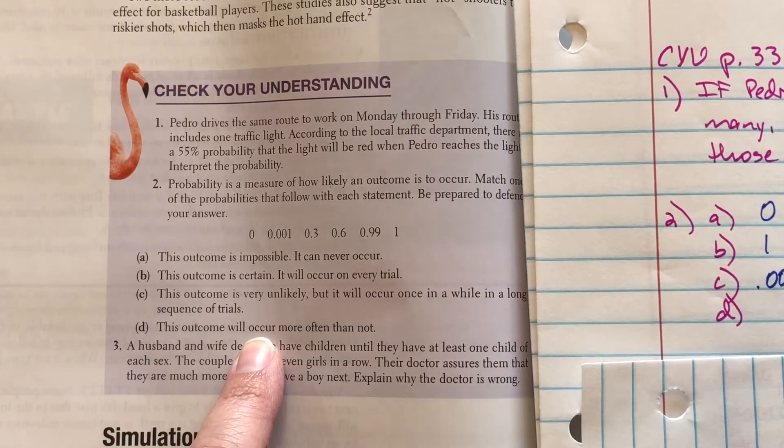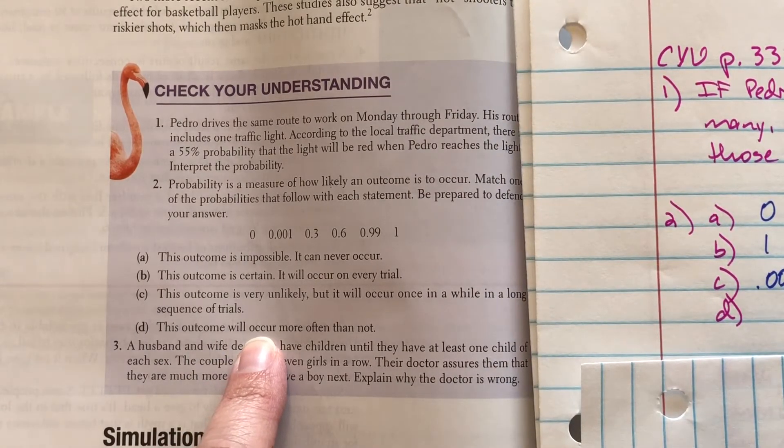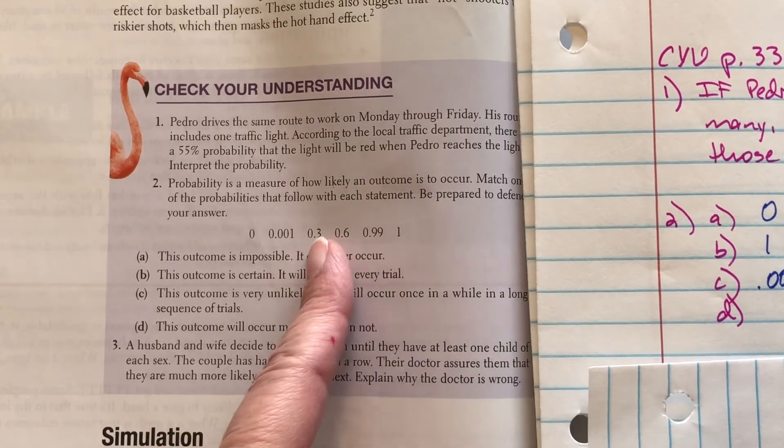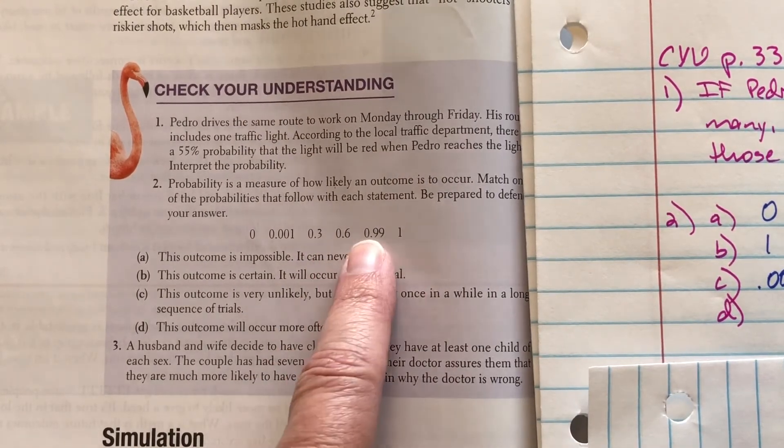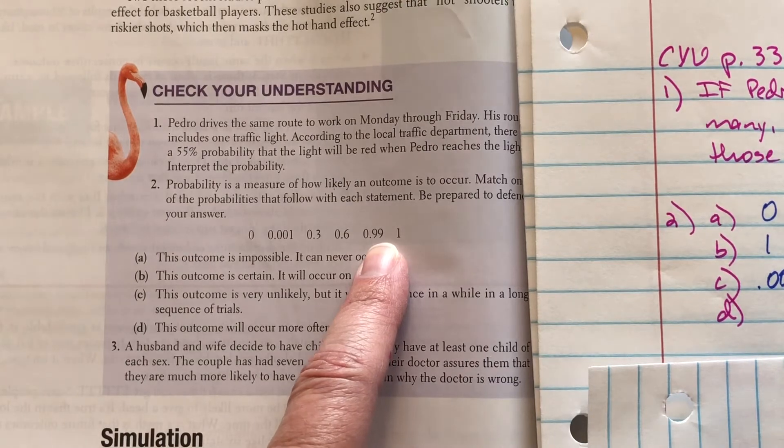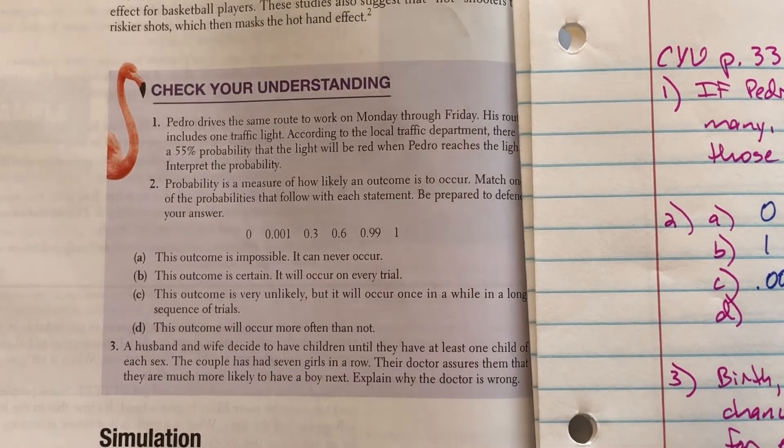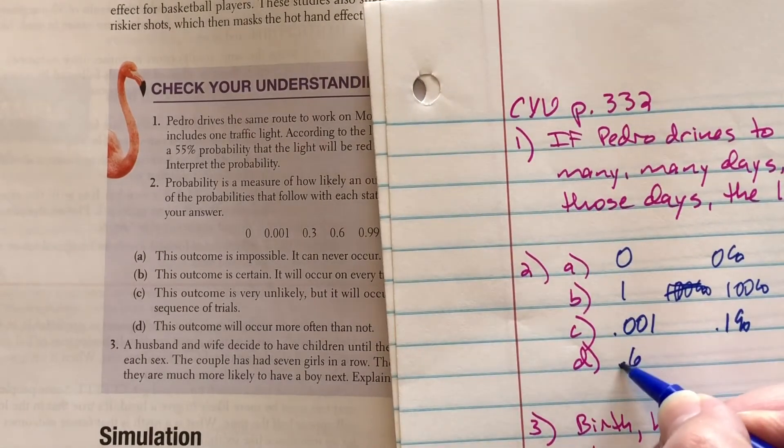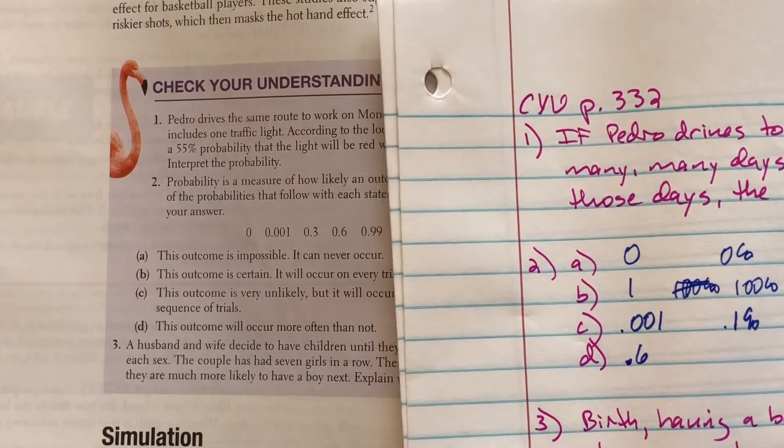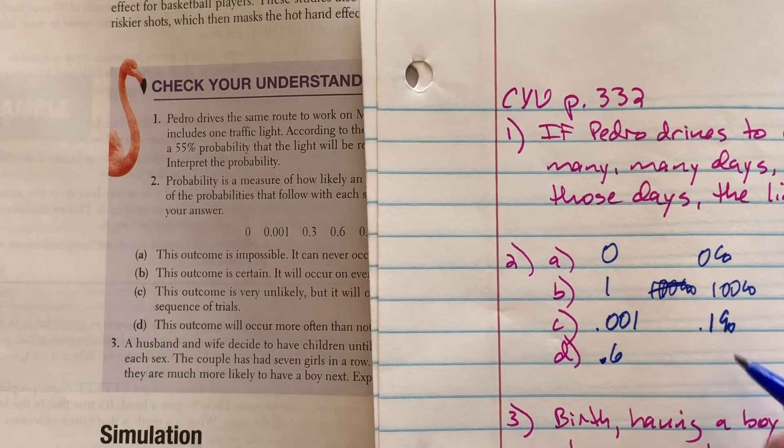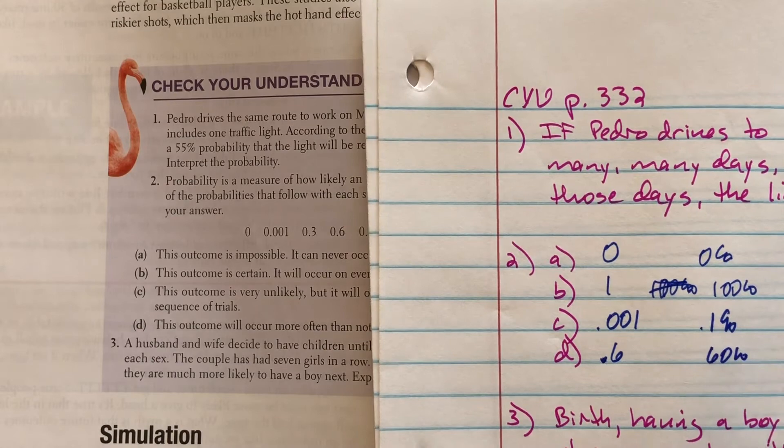And then the last one. This will, outcome will occur more often than not. So more often than not, it's got to be more often above 50%. This is occurring a lot. Every now and then it won't. So I'm going to say 0.6. So that's more often than not. So that's greater than 50%. But it's not all the time, like 0.99 would be. So that, of course, would be 60%.